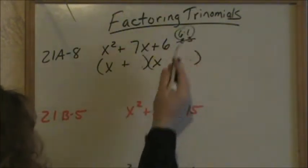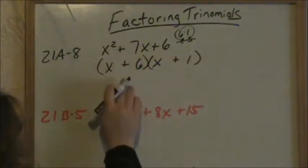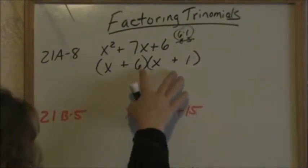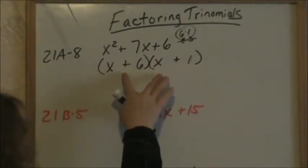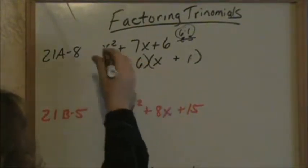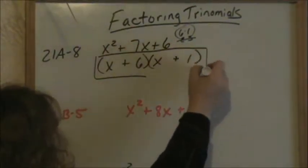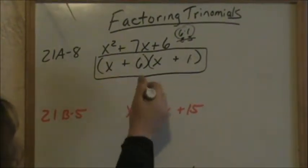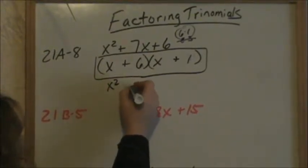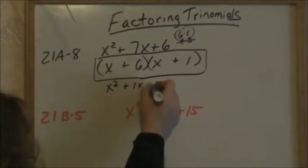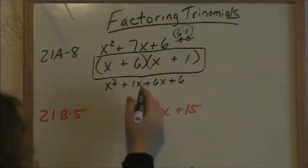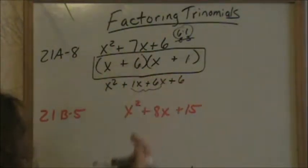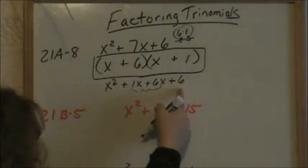We want to use the six and the one. Since these are both positive signs, it doesn't matter if the six and the one are here or they're reversed. When you FOIL this back out, this is your answer when you factor — but always FOIL it back out just to make sure that you get your original trinomial. When you FOIL this back out, you do get x squared plus one x plus six x plus six, and your one x plus six x does give you your seven x. So therefore, this does work. This is just going back to check yourself.